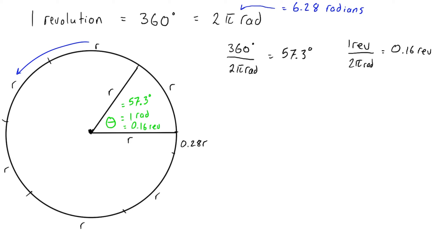Let's convert, say, four revolutions to radians. What we would do is we would multiply this by the fraction that has revolutions on the bottom, so one revolution times 2π radians on top.